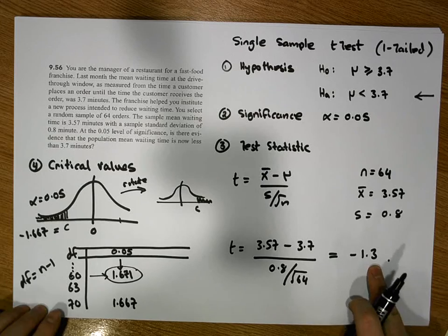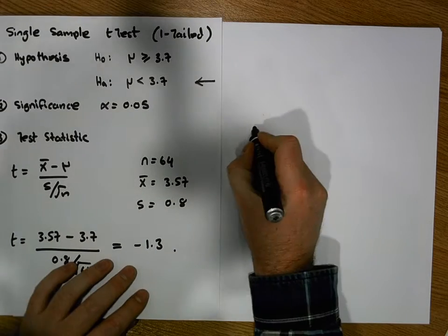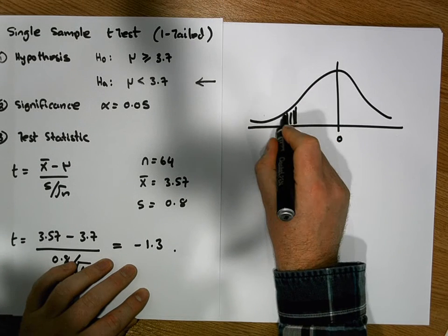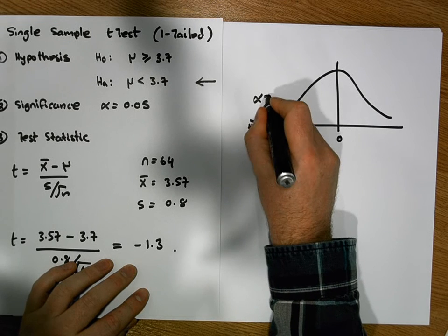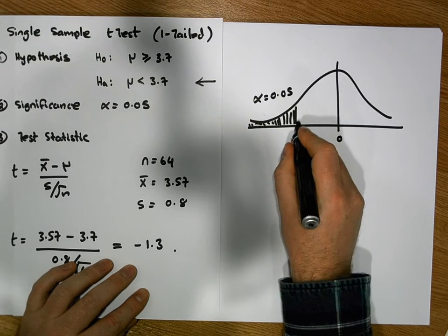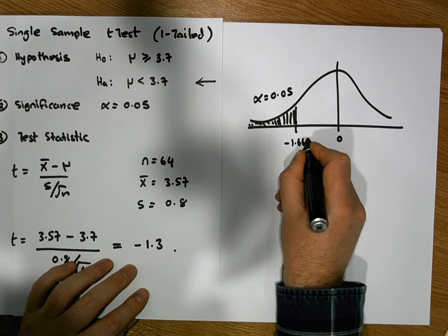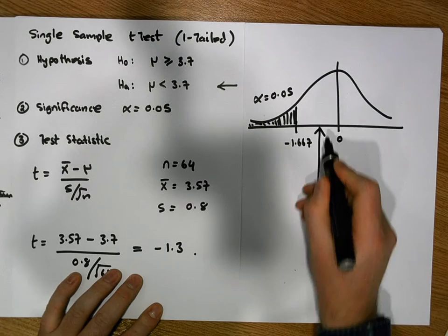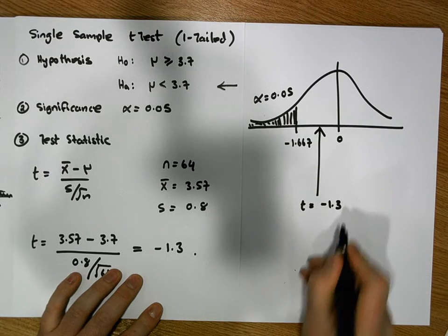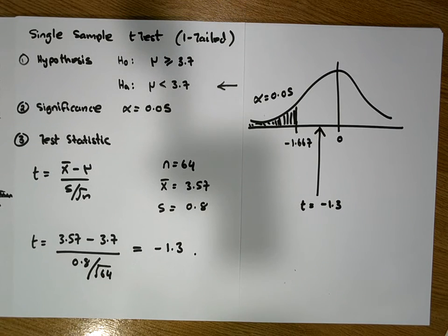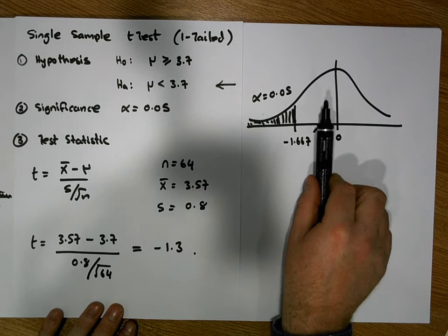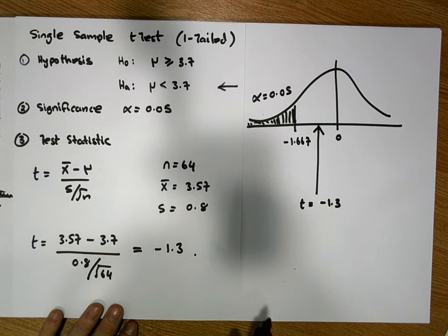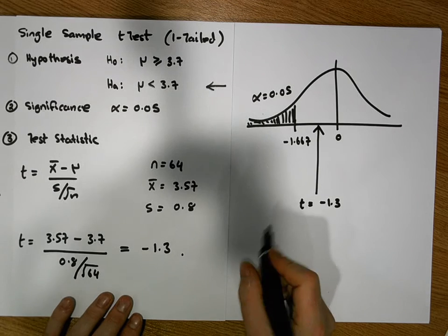Looking at the distribution centered on zero, the critical region is demarcated with alpha = 0.05 in the left tail at minus 1.671. Our test statistic t is minus 1.3, which does not fall in the rejection region — it is still too close to the hypothesized center of the distribution to be considered significantly different.